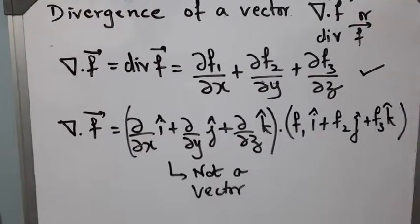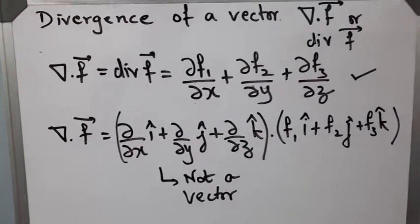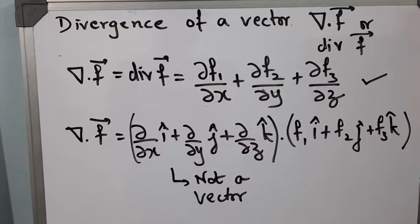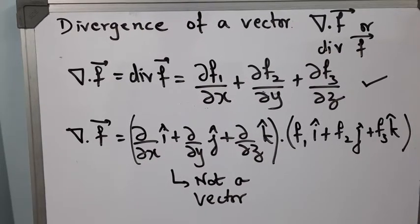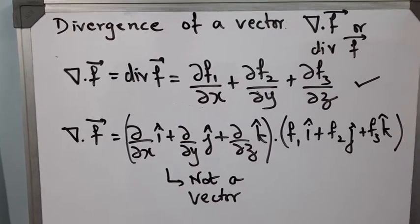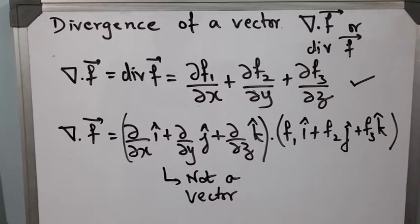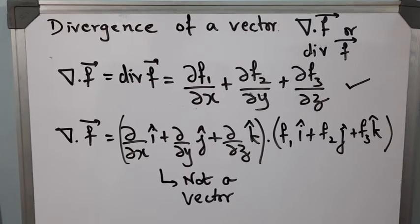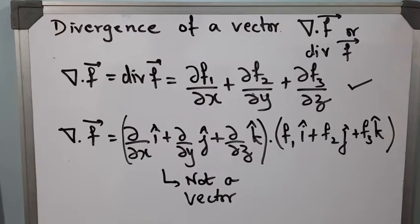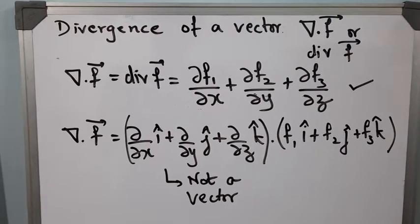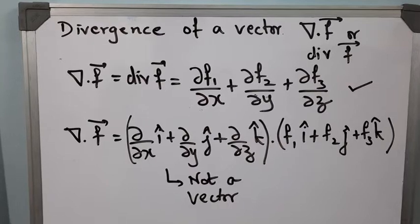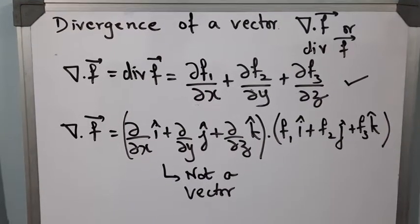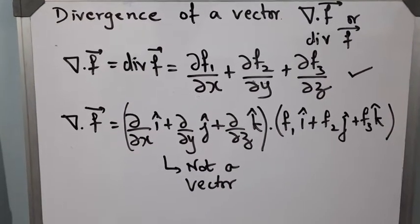In vector calculus, the symbols play a very significant role in representation. A dot or a cross, if it is misplaced, can give you a totally different meaning, and hence one has to be very careful related to that.